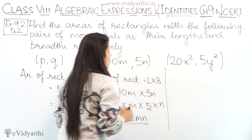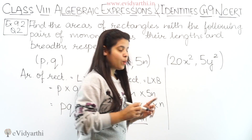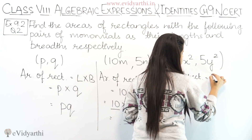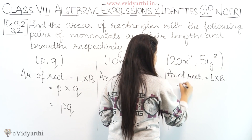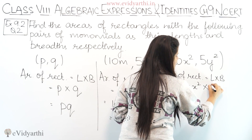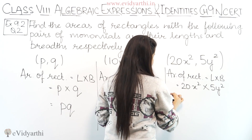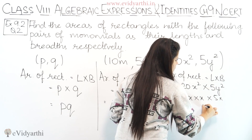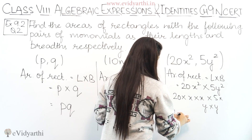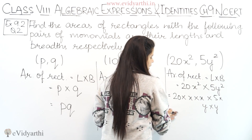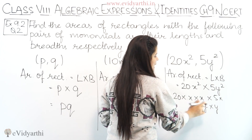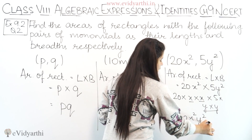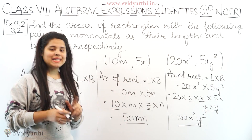The third part is 20x² and 5y². Area of rectangle equals L into B. Length is 20x² and breadth is 5y². So this is 20 into x² into 5 into y². Multiplying the numbers: 20 into 5 is 100. x appears twice (x²) and y appears twice (y²). So the answer is 100x²y².